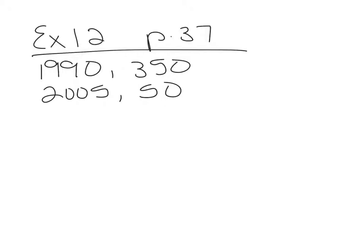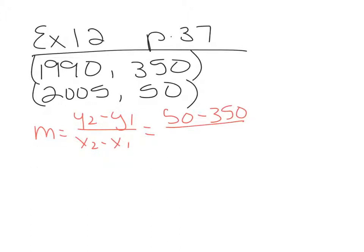All right, again, to write the equation of the line, we have to have a slope. So we're going to turn these into ordered pairs. And we're going to use the slope formula to find the slope. The slope formula says y2 minus y1 over x2 minus x1. x1, x2, y1, y2. And that's going to turn into 50 minus 350 over 2005 minus 1990. 50 minus 350 is negative 300. 2005 minus 1990 is 15. When we reduce that, it becomes negative 20.